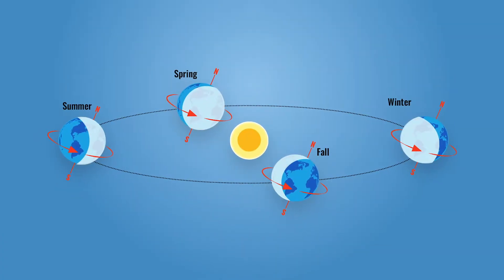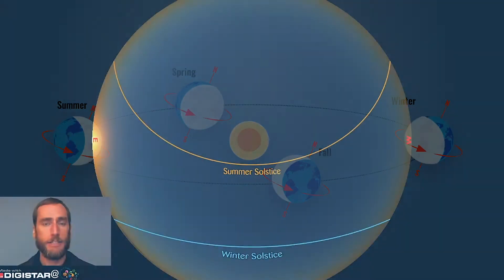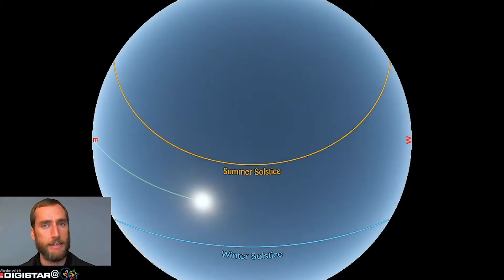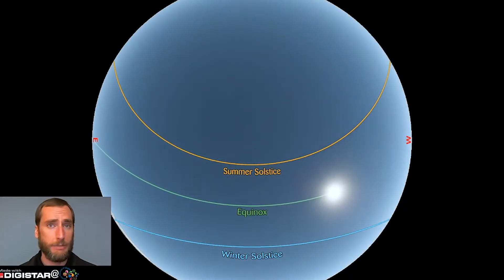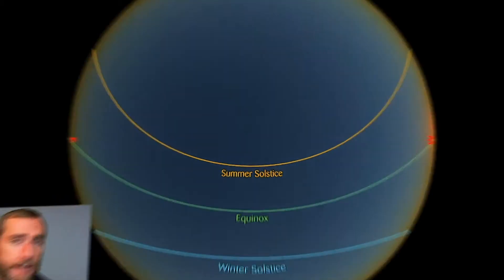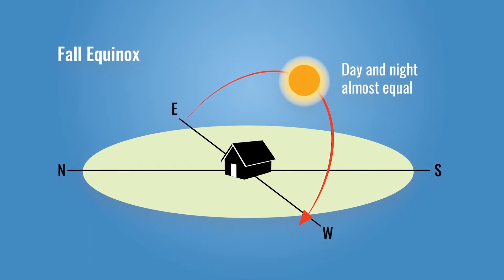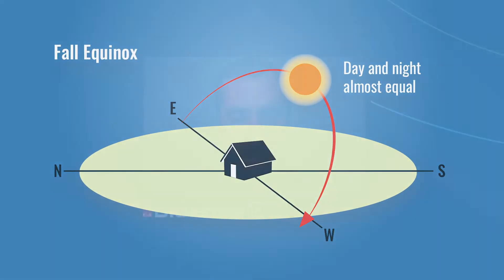On the equinoxes, in both March and September, the sun follows a path across the sky that keeps it above the horizon for approximately 12 hours. This leaves us with an approximately equal 12-hour period of darkness at night. But despite the name, it's only approximate. Daytime and nighttime are not precisely equal on the equinoxes. Why not?